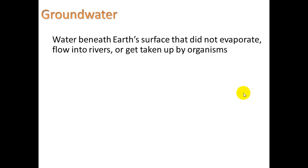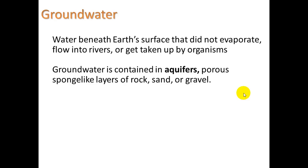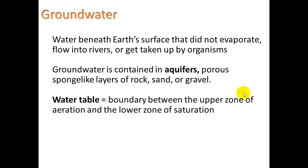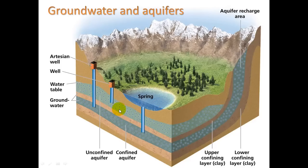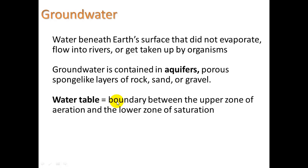Groundwater is water beneath Earth's surface that did not evaporate, flow into rivers, or get taken up by organisms. It is contained in aquifers — porous, sponge-like layers of rock, sand, or gravel. The water table is the boundary between the upper zone of aeration and the lower zone of saturation. The saturated part of the 'sponge' is filled with water; the part above is filled with air — the aerated zone. The water table sits at the boundary of those two.